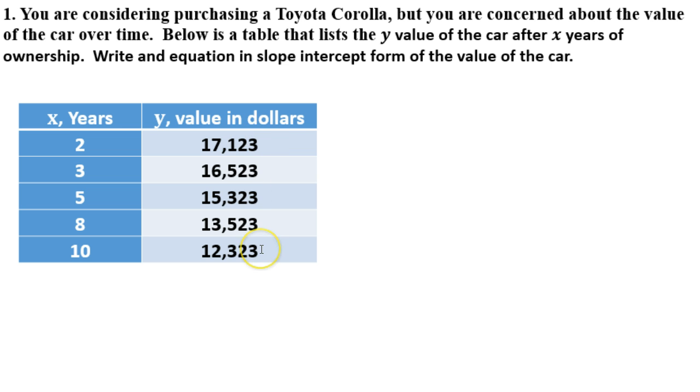This works under specific scenarios such as this one, in which all of these change at the exact same rate. If they all change at the exact same rate, we can pick any two points. I can pick 10 comma 12,323, and then I can pick 2 comma 17,123 if I wanted to. I could pick 3 and 16,523 if I wanted to, any of those.